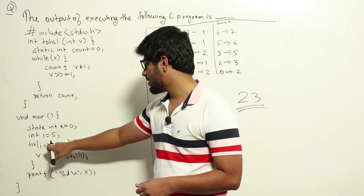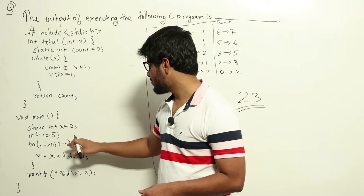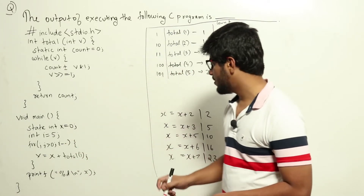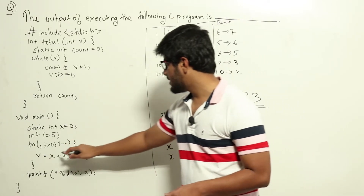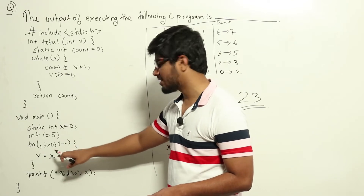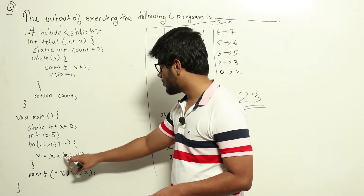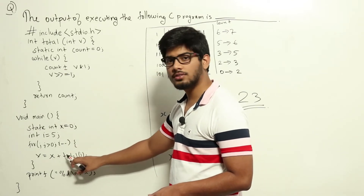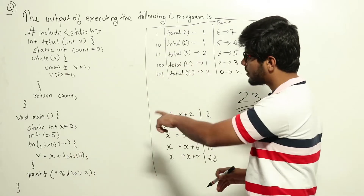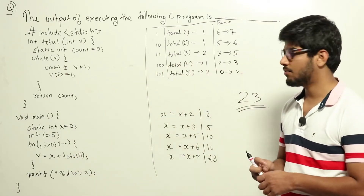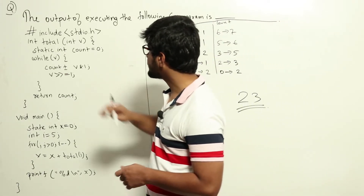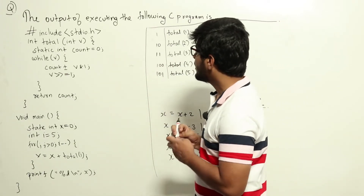Inside the loop, i changes from 5, 4, 3, 2, 1, and when it becomes 0 the loop exits. So from 5 to 1 this part executes — initially i is 5, so it calls total(5), then total(4), total(3), total(2), and total(1).